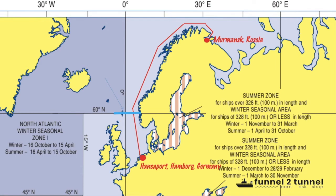Hansaport is in Hamburg, Germany. The route between both the loading and discharging ports lies entirely in the winter zone. For reference, I have marked the limit of 60 degrees North — south of this is the ECA area, where we need to use fuel with sulfur content of 0.1% or less. North of 60 degrees North is not an ECA area. So for the leg from Murmansk to 60 degrees North we shall use VLSFO, and from 60 degrees North to Hansaport, Germany, we shall use LSMGO.